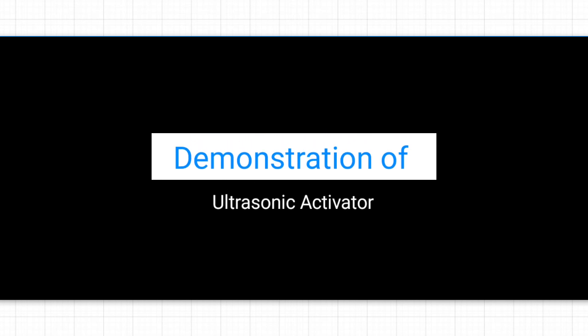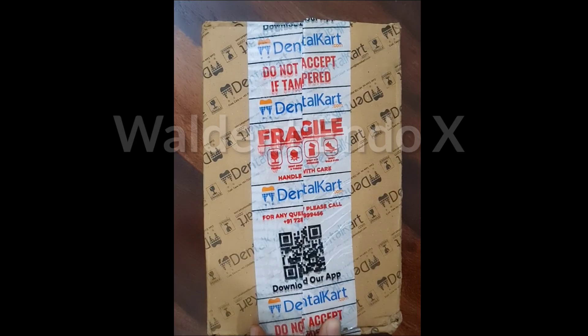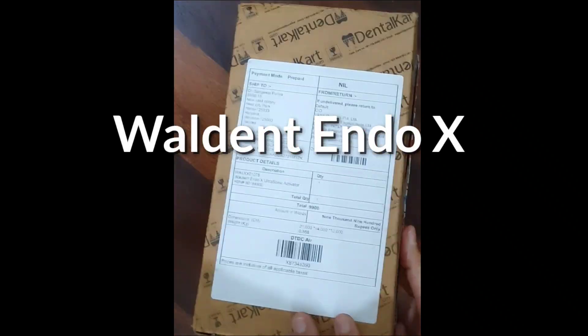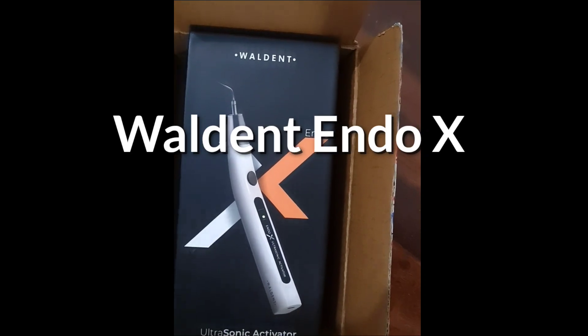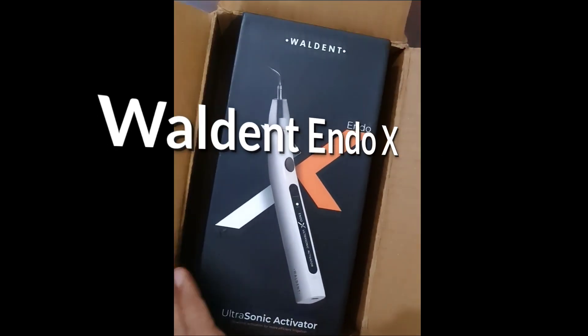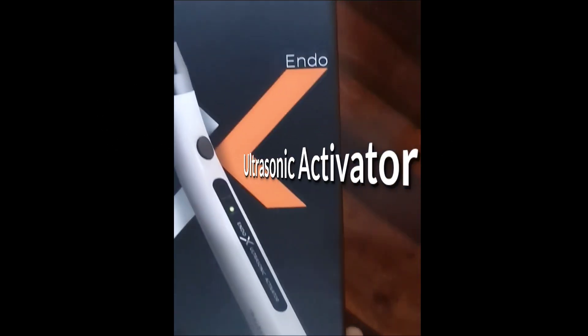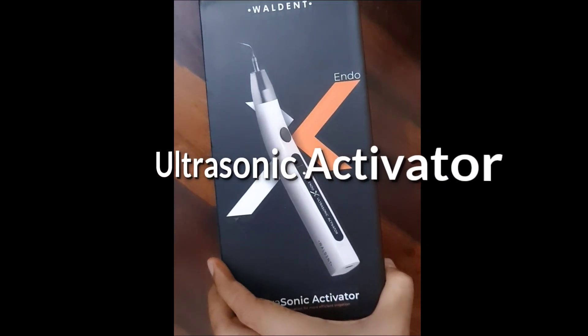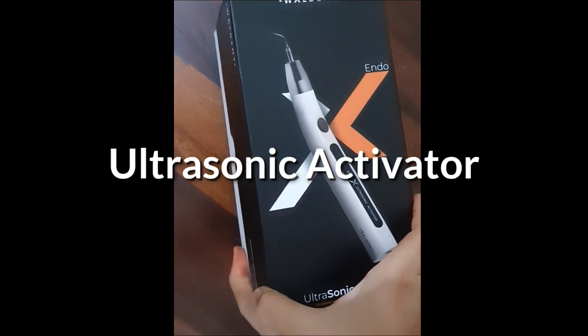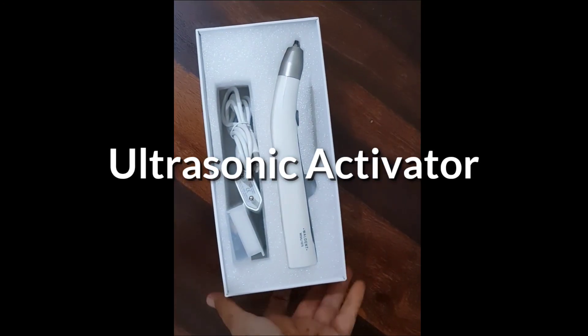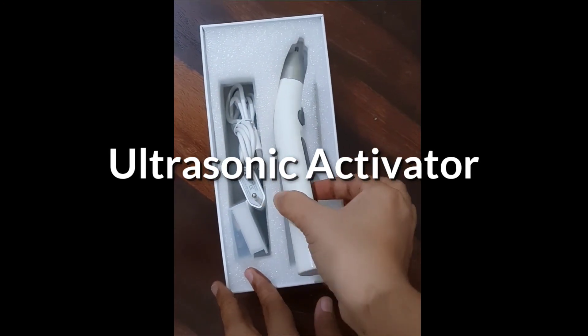This video is a demonstration of ultrasonic endo activator. Ultrasonic endo activator uses ultrasonic irrigation technology for deep irrigation of the root canals. It causes activation of the irrigating solution and helps in deep cleaning and disinfection into the lateral canal fins and the webs. For this video, I am using Valdent Endo X ultrasonic activator.